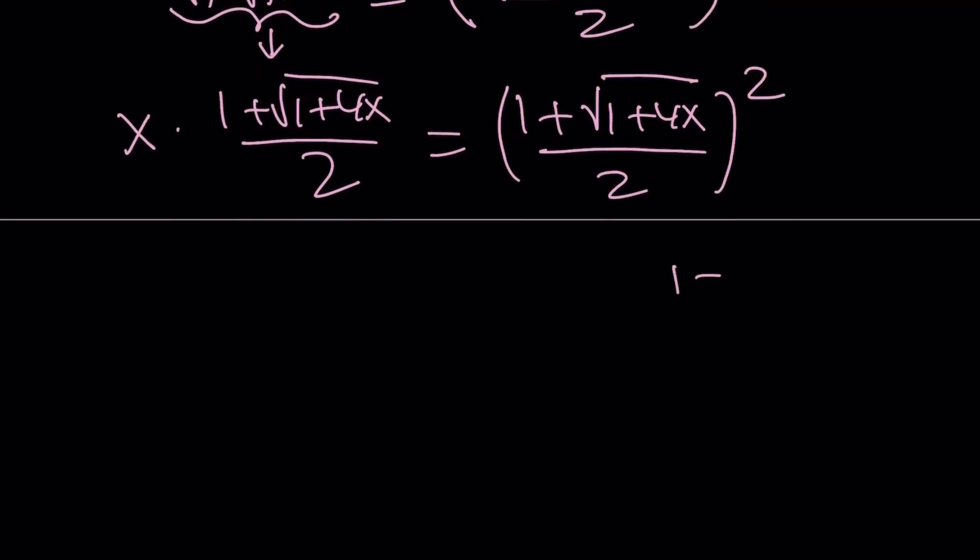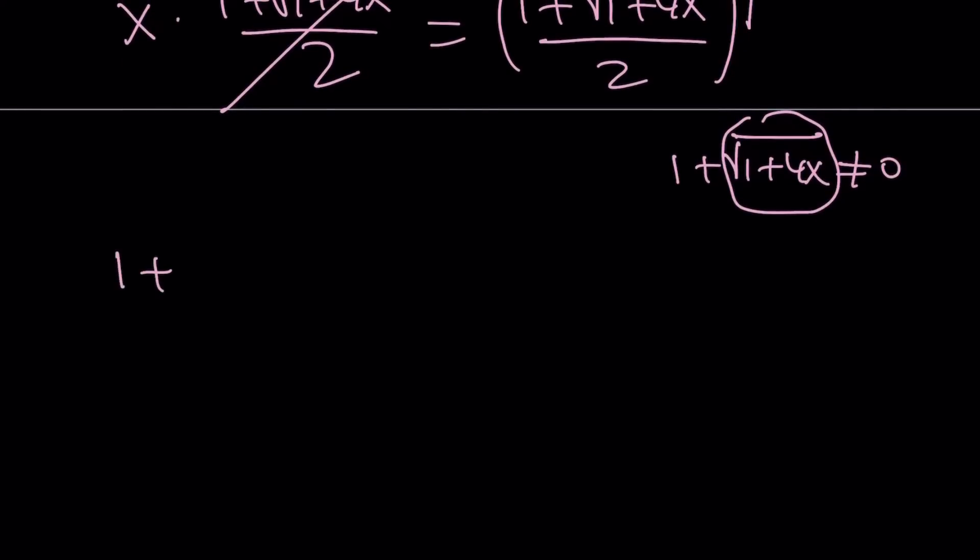Now, notice that 1 plus the square root of 1 plus 4x cannot equal 0, because that would indicate that this radical equals negative 1. So we can basically divide both sides by that, and that gives us something real cool. We can go ahead and simplify this, like take one of these out. And now, we have a simple equation. Let's go ahead and rewrite it. This equals x.